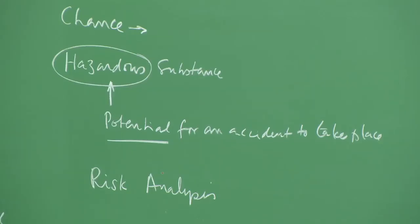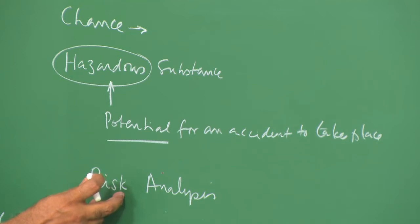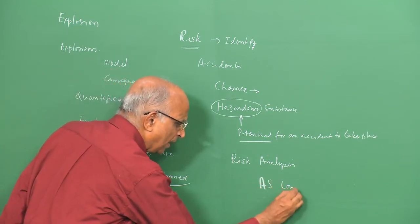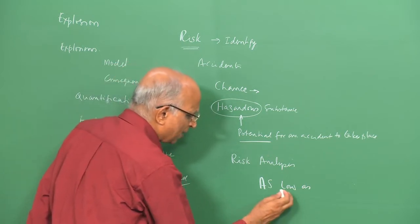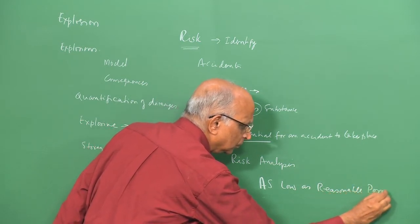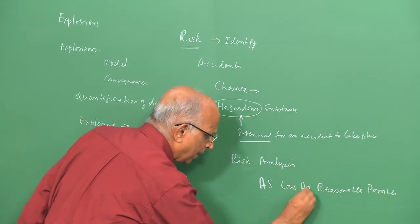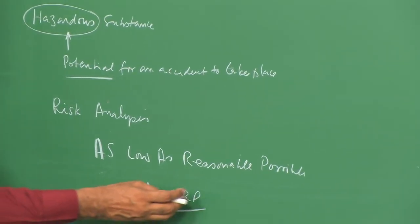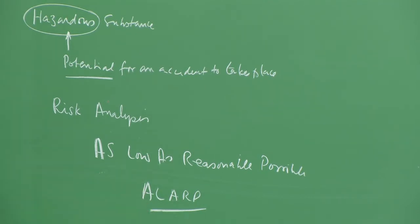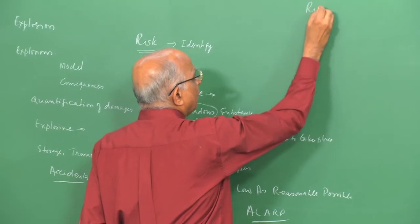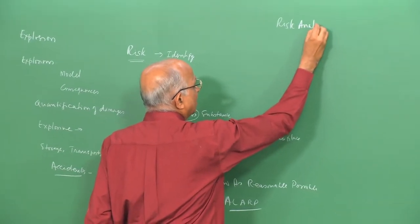We cannot make the chance of having an accident zero. Therefore, all we can say is let us make it as low as practically possible — as low as reasonably possible — and we call it ALARP. This is the word we use: we would like the risk to be as low as reasonably possible. In this class today we will work on the subject of risk analysis of hazardous substances, namely explosives.